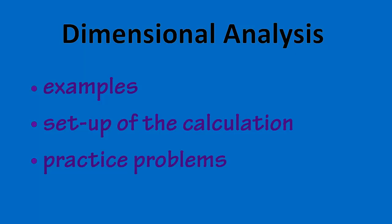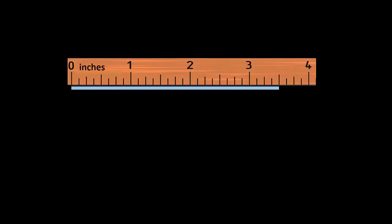A single measure can be expressed with different numbers depending on the unit being used. A simple example would be measuring the length of a line. You could use inches, and this line would be 3.50 inches.